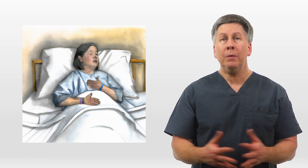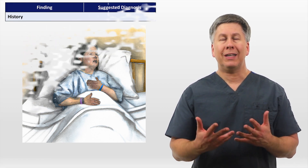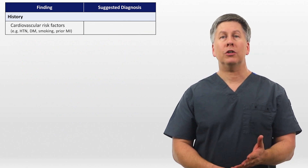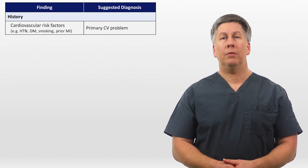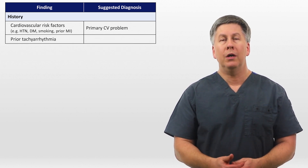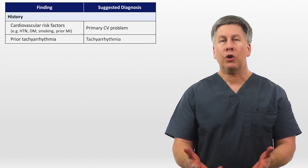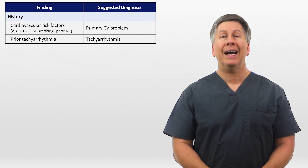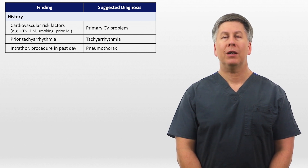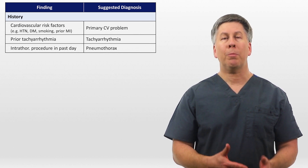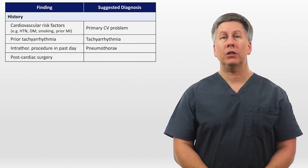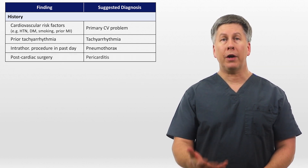If she's a patient of your own, you likely already know the answers to the key historical questions. For example, does she have classic cardiovascular risk factors? Does she have a history of prior tachyarrhythmia, such as paroxysmal afib, which would obviously make that one of the more likely causes? Has she had an intrathoracic procedure within the past day, including thoracentesis, central line, or pacemaker placement? Has she had cardiac surgery within the last several weeks, which would place her at risk of pericarditis?